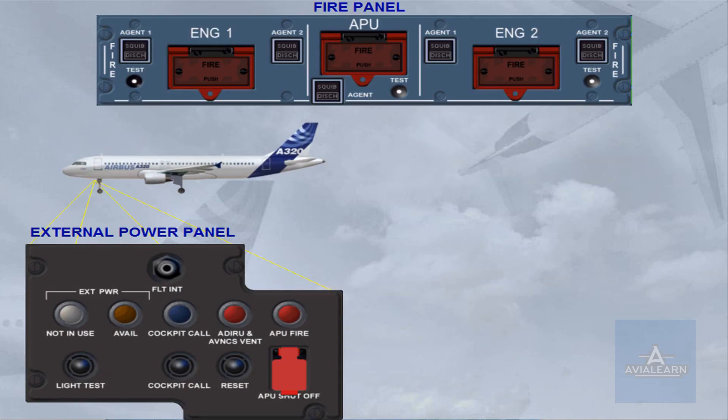If necessary, an emergency shutdown can be initiated by pushing the APU shut-off push-button located on the external power panel in front of the nose gear bay, or by pushing the APU fire push-button on the fire panel. In both cases, APU emergency shutdown is displayed on the engine warning display, but the fire extinguisher bottle is not automatically discharged.